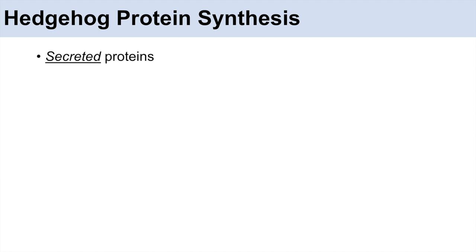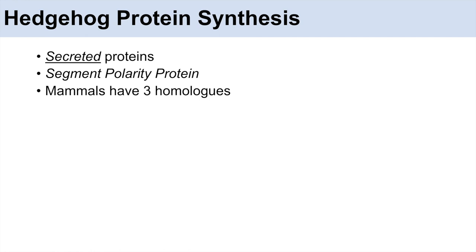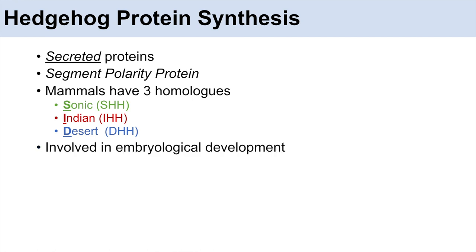What are the hedgehog proteins? They are secreted proteins and they are segment polarity proteins. In mammals there are actually three homologues of hedgehog proteins: one is known as Sonic Hedgehog or SHH, another one is Indian Hedgehog or IHH, and the other one is Desert Hedgehog or DHH. All these hedgehog proteins are involved in the hedgehog signaling pathway, which itself is involved in embryological development — more specifically, we see an example of this in digit or finger formation in mammals.